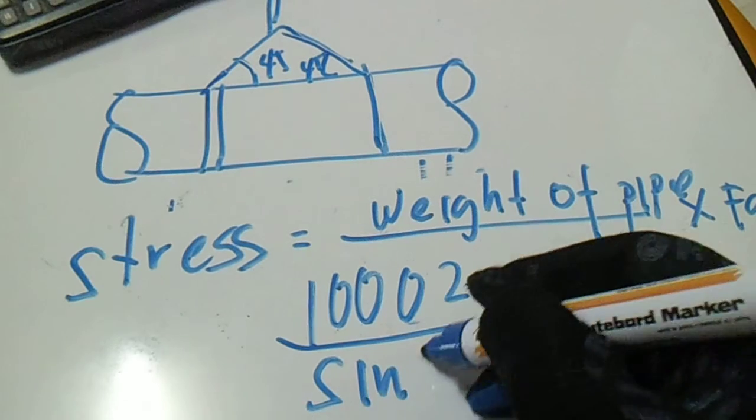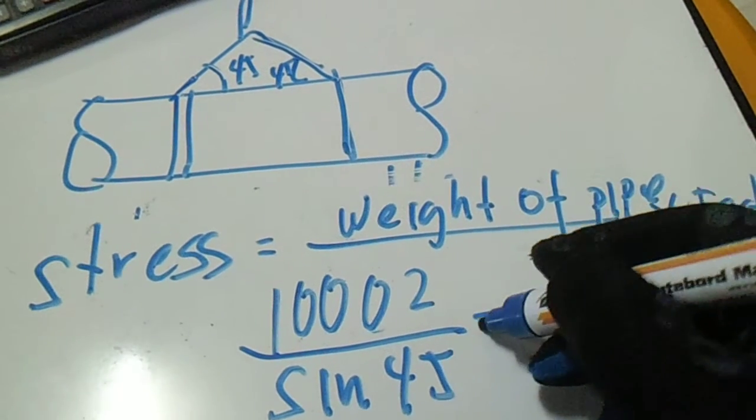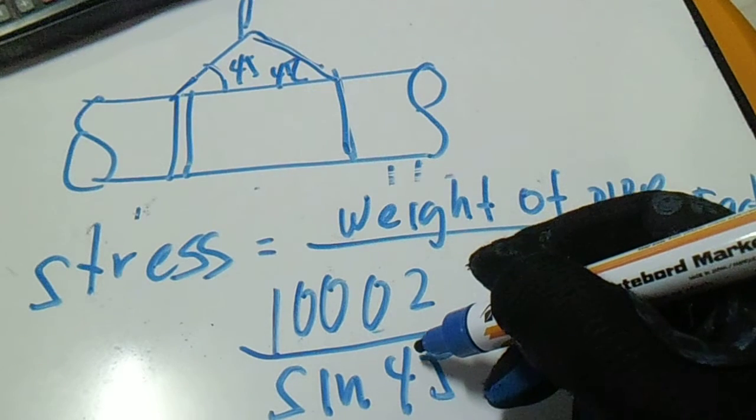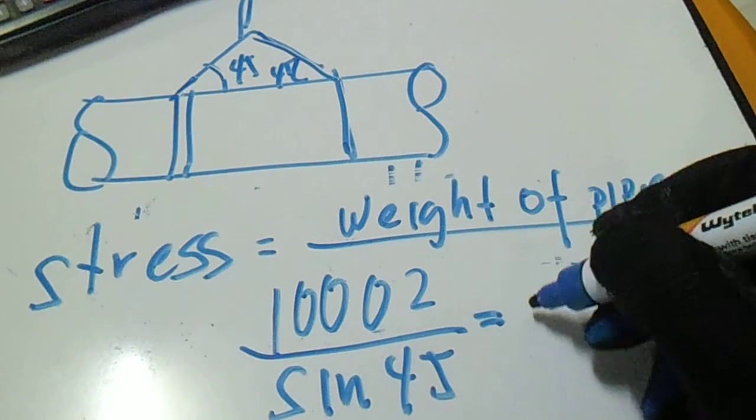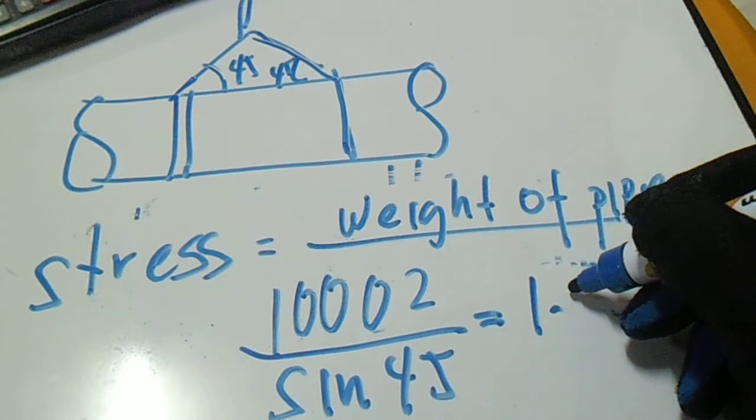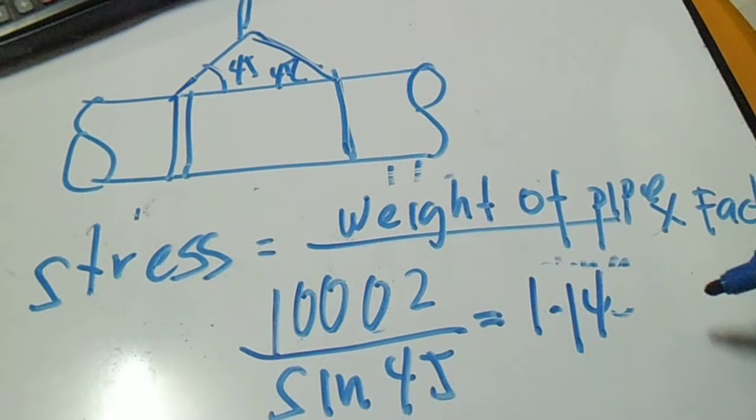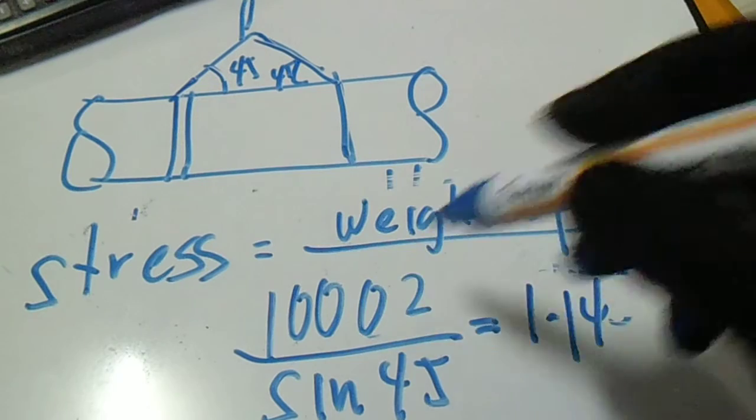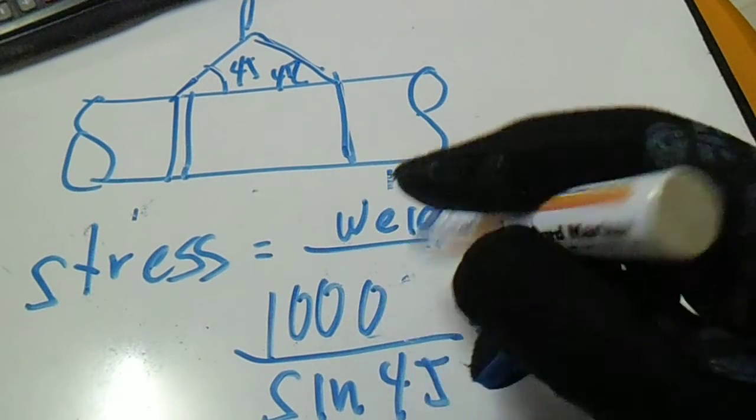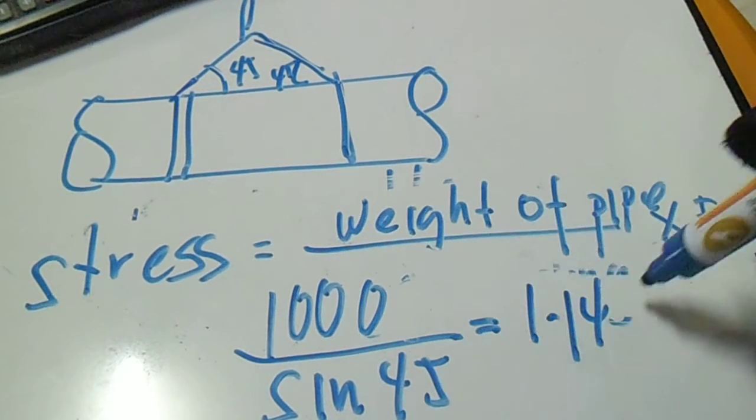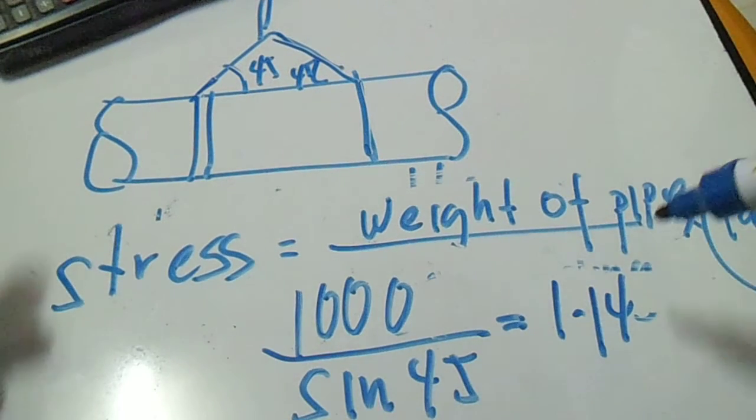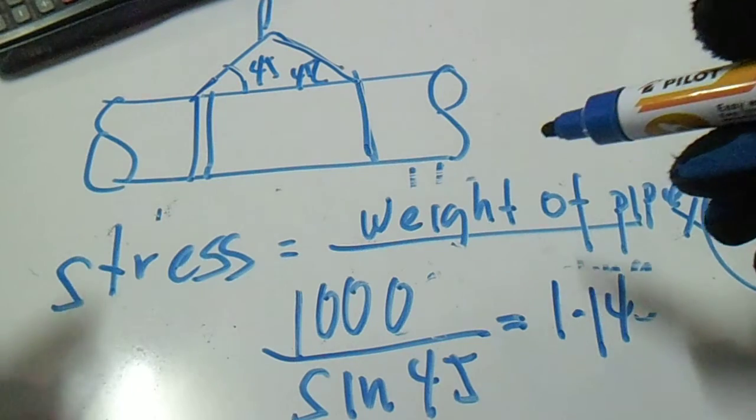...divided by sin 45 to get the factor. So the factor of this 45-degree angle is 1.14. This is the formula to get the factor of the stress of the sling.